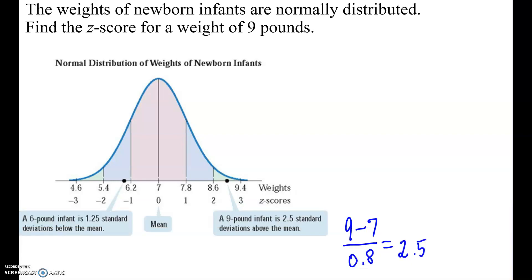When we actually calculated, taking the data item 9 minus the mean of 7 and dividing it by 0.8, the standard deviation, we get 2.5. That's telling me that I am way outside the normal area.